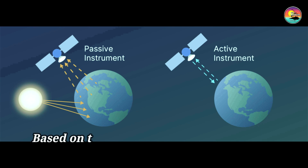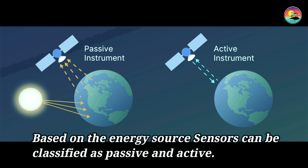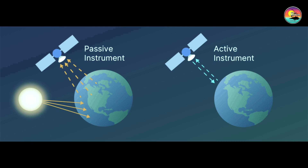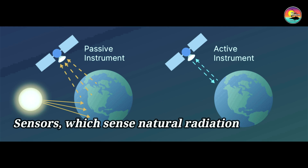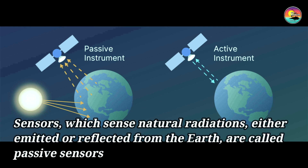Based on the energy source, sensors can be classified as passive sensors and active sensors. Passive sensors, which sense natural radiations either emitted or reflected from the Earth, are called passive sensors.